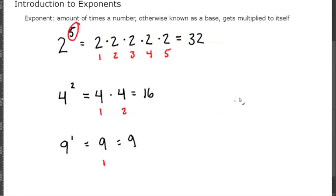Let's look at one more example: what would 5 to the 0 be? 5 to the 0 is 5 multiplied to itself 0 times. I know this is a little confusing, but any number, any base to the 0, is always going to be 1. So 5 to the 0 is 1.